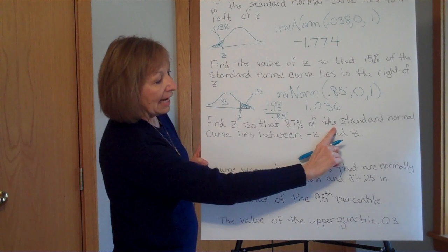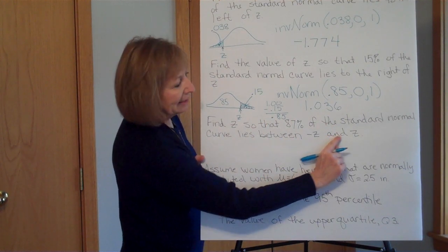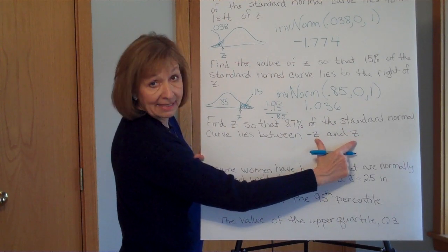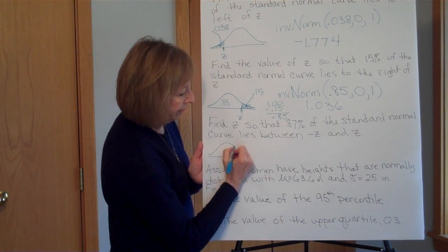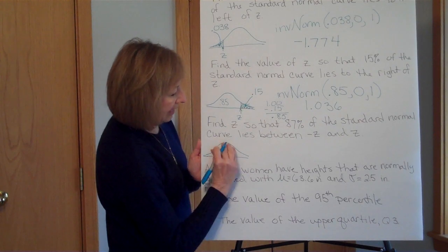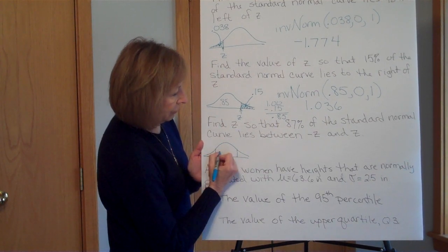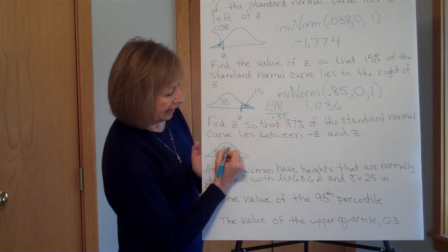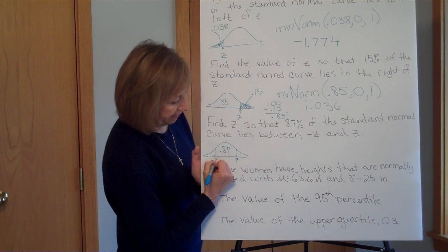How about finding the z so that 87% of the standard normal curve lies between negative z and positive z, so opposites of each other. So this means it's going to be centered. So here's my normal curve, and I'm centering it, so I have 0.87 in the center and z and the opposite of z.